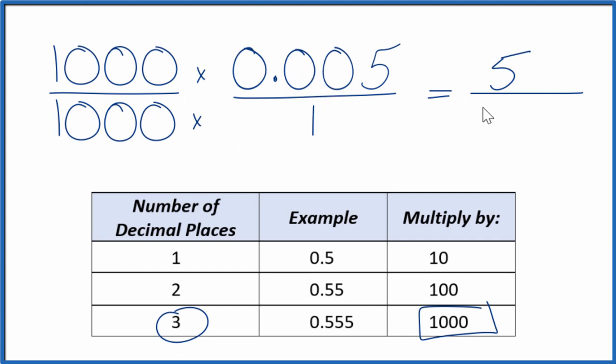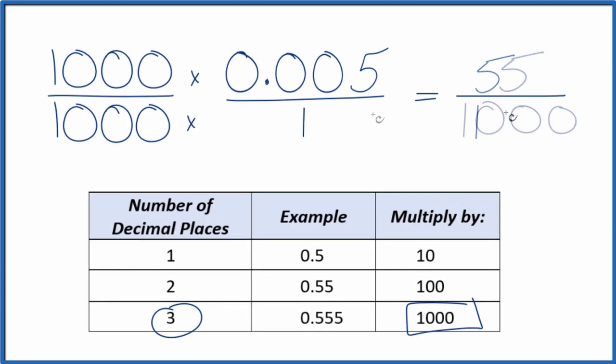So 1,000 times 1 gives us 1,000. So the decimal 0.005 equals the fraction 5 over 1,000. But we can simplify this further.